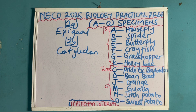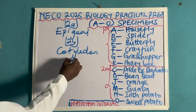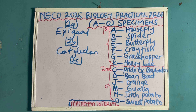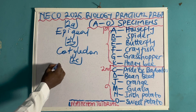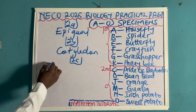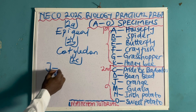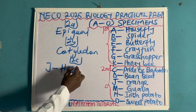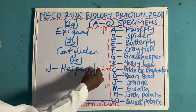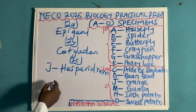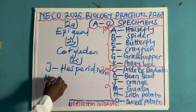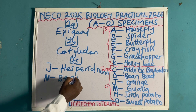Another thing they can ask — let me name that 2C — is to identify the fruit type of specimen J and specimen M. For specimen J, which is orange, the fruit type is a hesperidium. For specimen M, which is guava, the fruit type is a berry.